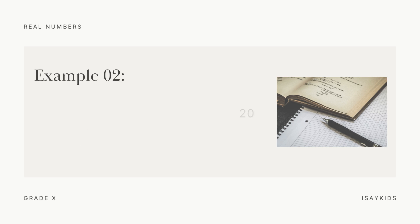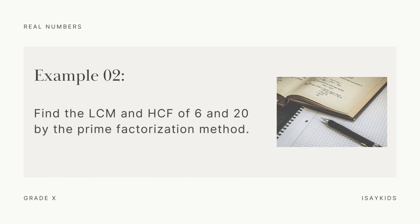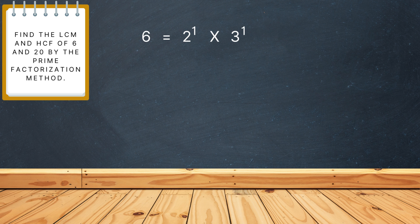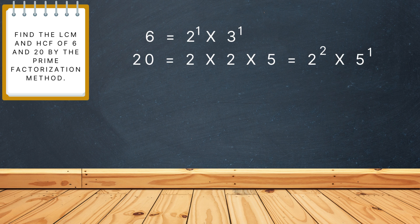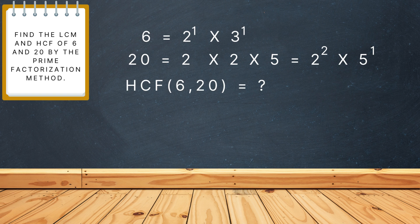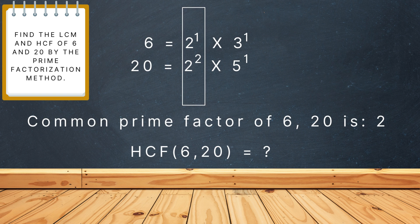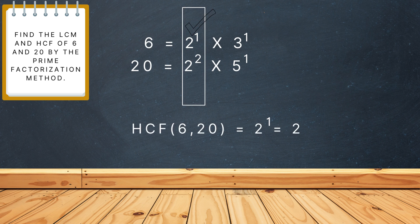Let's see an example. We need to find the LCM and HCF of 6 and 20 by the prime factorization method. We have 6 equal to 2 into 3, and 20 equal to 2 raised to the power 2 into 5 raised to the power 1. HCF would be the product of the smallest power of each common prime factor, and the common prime factor is only 2, with the smallest power being 1. Hence, the HCF is 2.